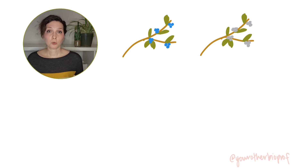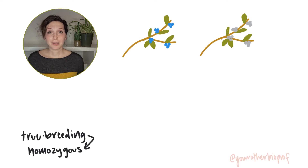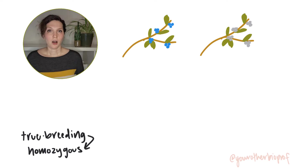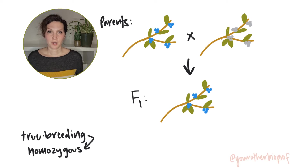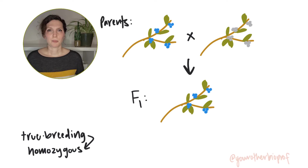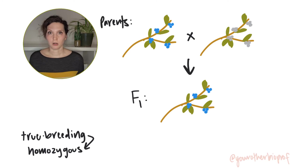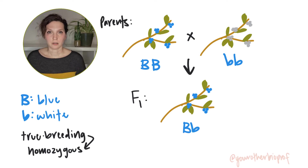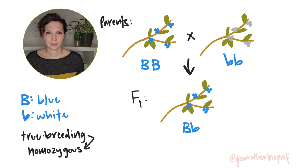Now if we take a true-breeding blue plant and cross it to a true-breeding white plant, all of the F1 have blue berries. From that we can conclude that blue is dominant over white, so we'll call the blue allele big B and the white allele little b. But what's going on here?